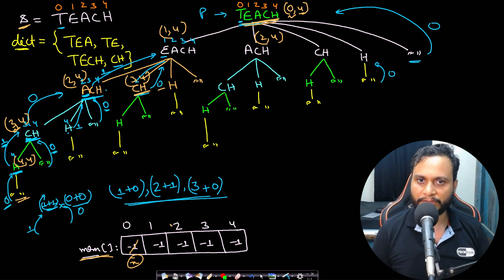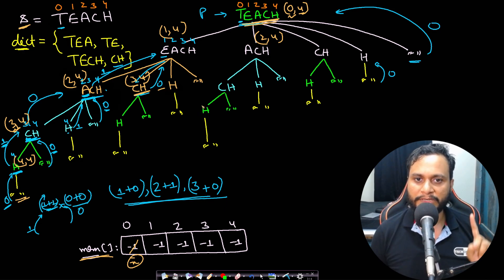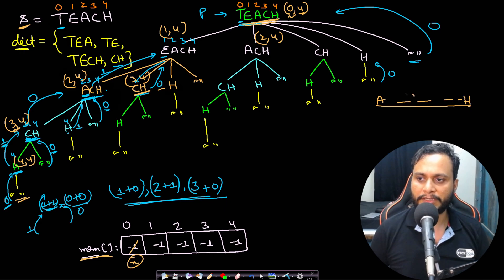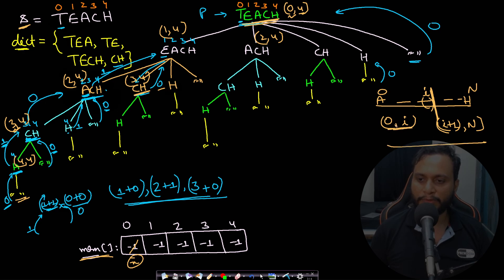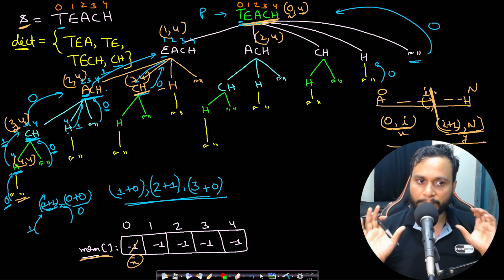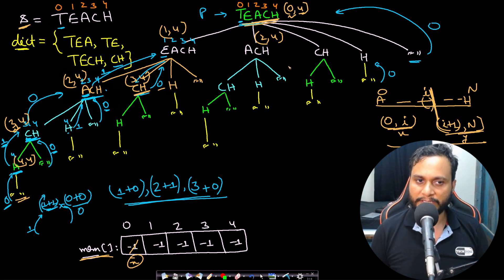This is a typical recursion with partition algorithm using memoization. For DP we need two properties: repeating subproblems (confirmed) and optimal substructure. Optimal substructure means: if I partition at index i, and get x residual characters from 0 to i, and y residual characters from i+1 to n, then x + y gives the total residual characters for that partition. We can use subproblem answers to build larger answers, so dynamic programming is optimal here.